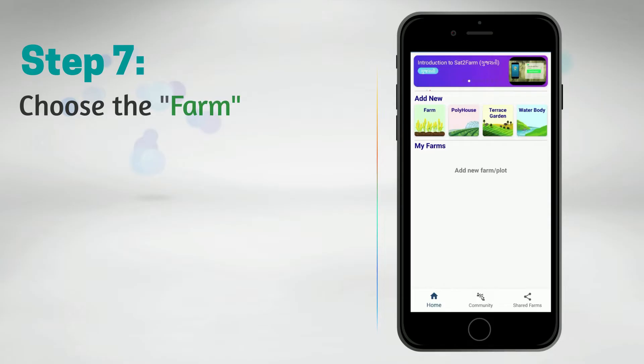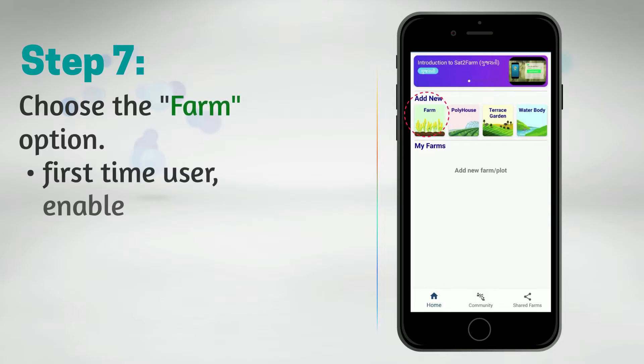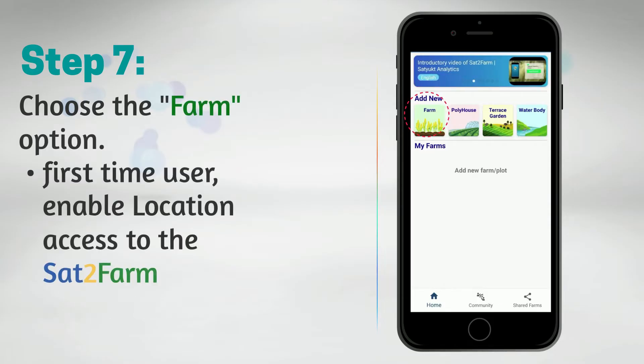Step 7: Choose the Farm option. If you are a first-time user, enable location access for the SAT2Farm application.